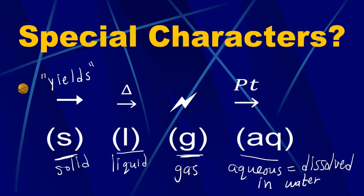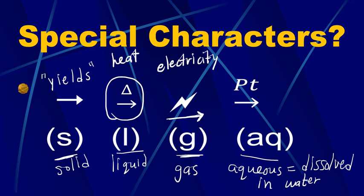We already talked about how the arrow means 'yields.' Sometimes we can put things over the arrow to represent something else. If you see an arrow with a triangle over it, that means heat must be added to the reaction. If you ever see an arrow with a lightning bolt over it, that means electricity must be added—it's a process called electrolysis. If you see an arrow with a chemical symbol or formula over it—I chose Pt because platinum is a common one, or maybe KI—that means the potassium iodide or the platinum will be used as a catalyst. It's not a reactant or product; it's being used as a catalyst. As we'll learn later, a catalyst is used to speed up a reaction without being used up.